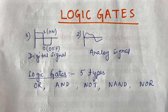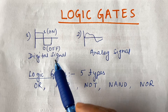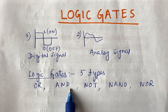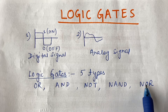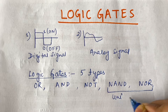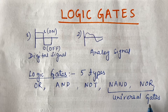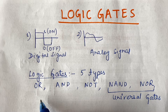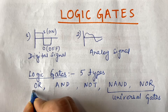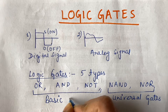Logic gates are circuits that work on digital signals. There are basically five types of logic gates: OR gate, AND gate, NOT gate, NAND, and NOR. NAND and NOR are called universal gates because we can derive all other gates from them. OR, AND, and NOT are called basic gates.